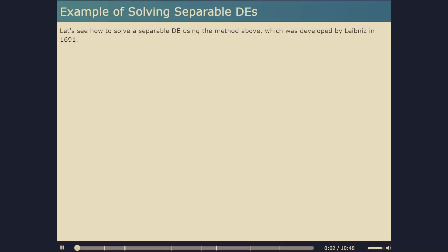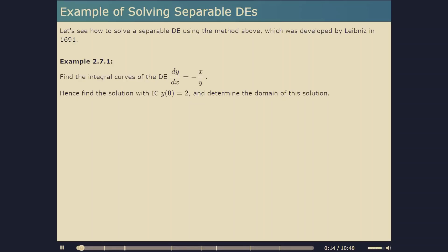Next, let's look at several examples of solving separable DEs. The method was developed by Leibniz in 1691. The first example, 2.7.1, is the DE dy/dx equals minus x over y. We want to find the solution with initial condition y(0) equals 2 and determine the domain of this solution.